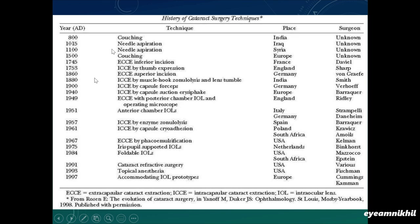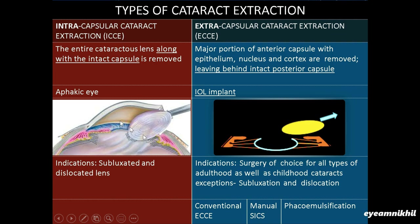Cataract surgery has since then come a long way from couching through intracapsular and extracapsular cataract extraction to phaco emulsification. The types of cataract extraction can broadly be classified into intracapsular cataract extraction and extracapsular cataract extraction. In intracapsular cataract extraction, the entire cataract lens along with intact capsule is removed — the zonules are broken and the entire lens is removed, so there is no capsular bag left behind.